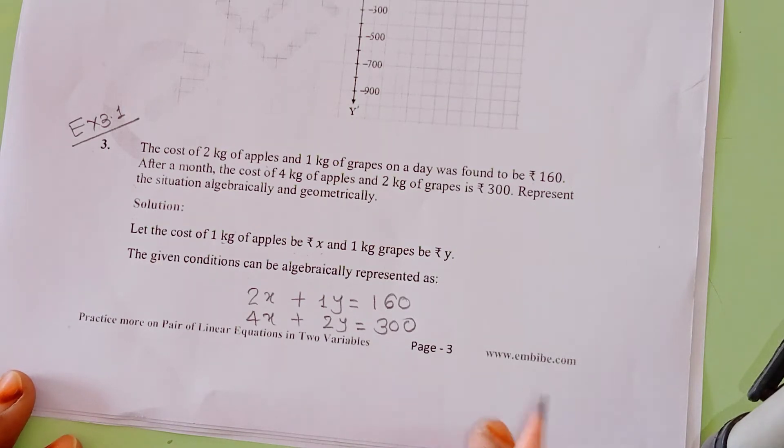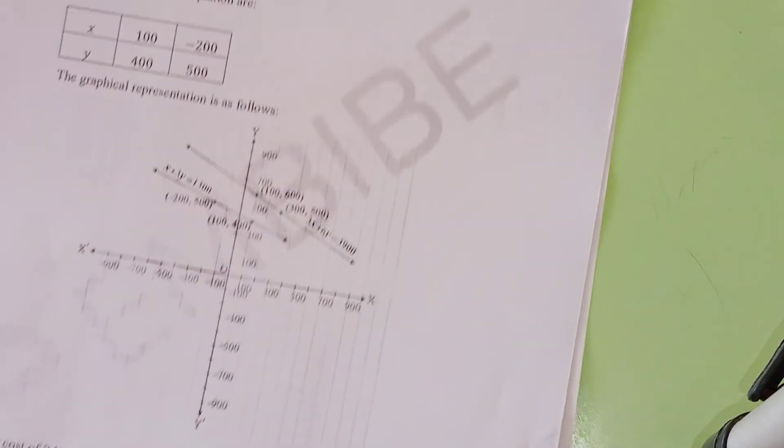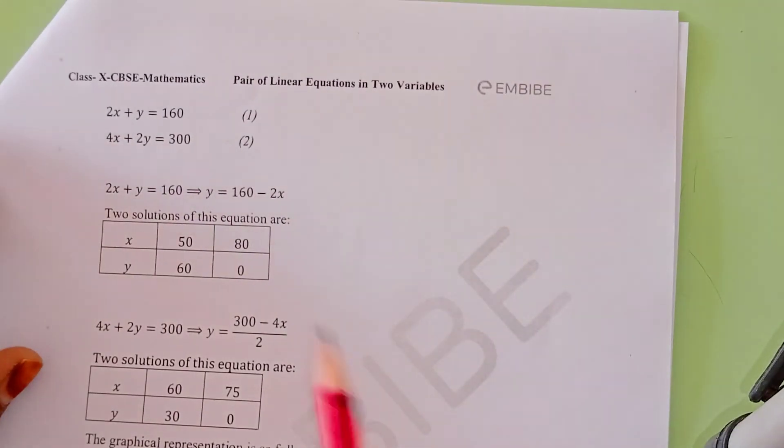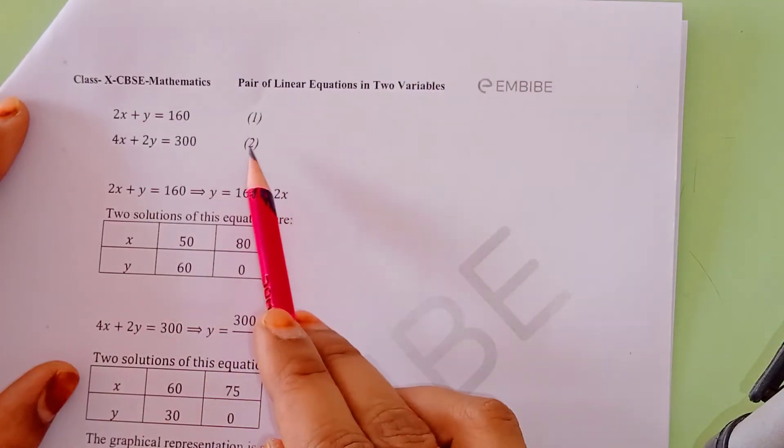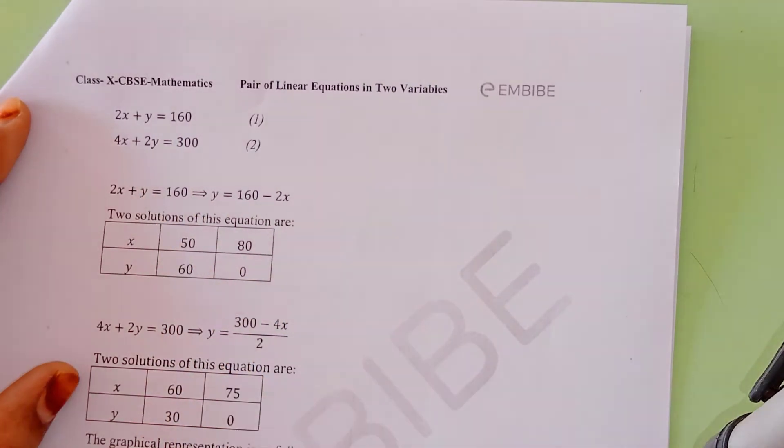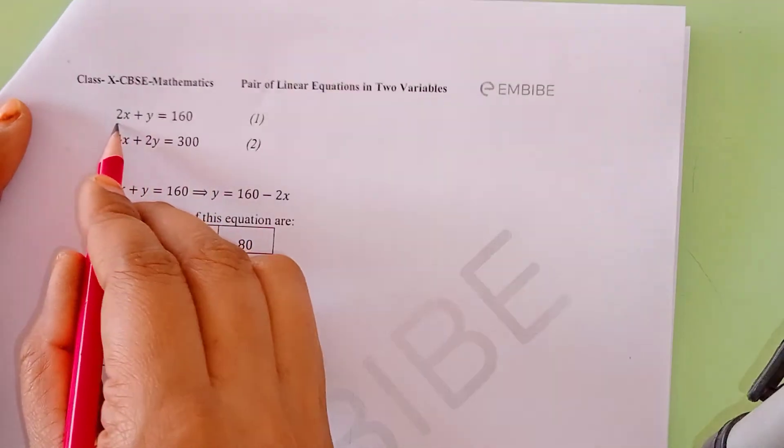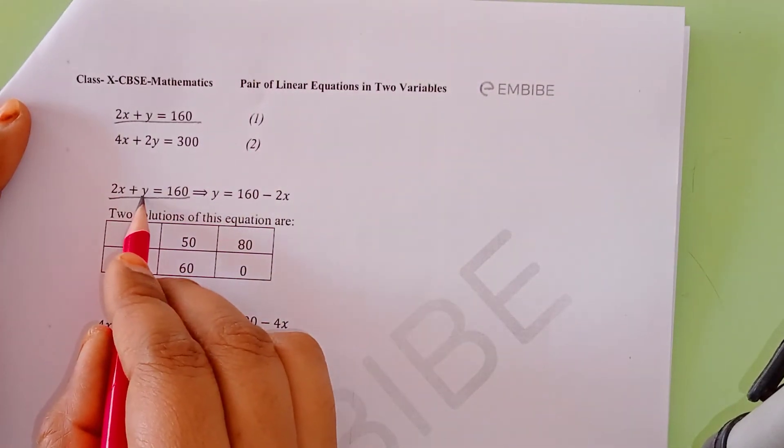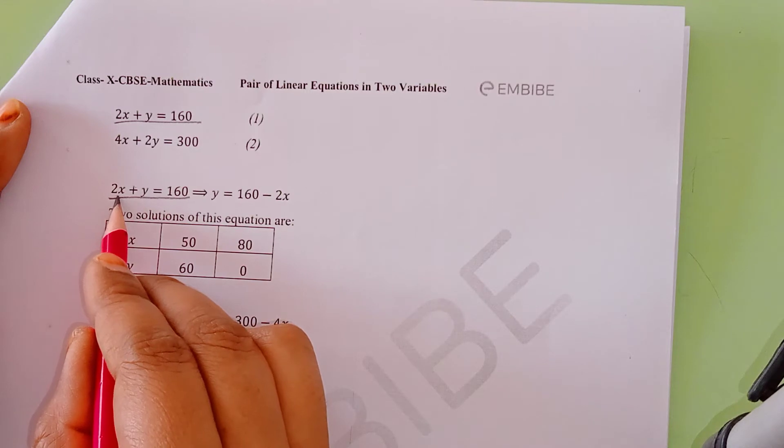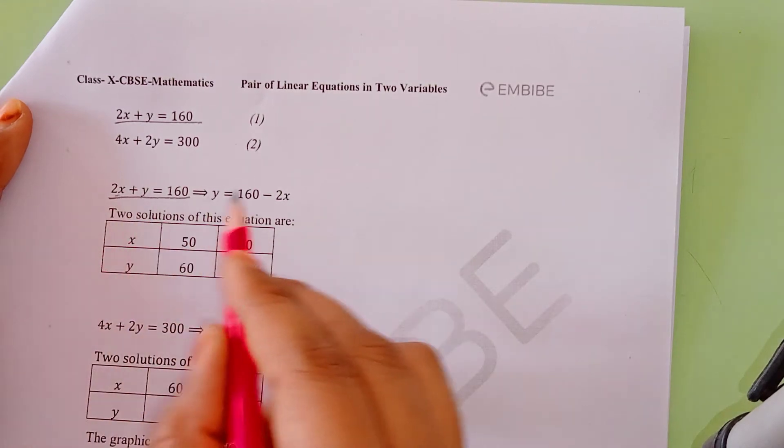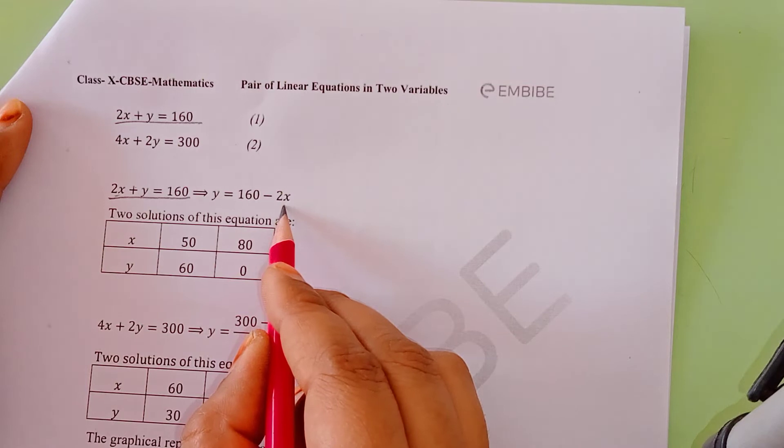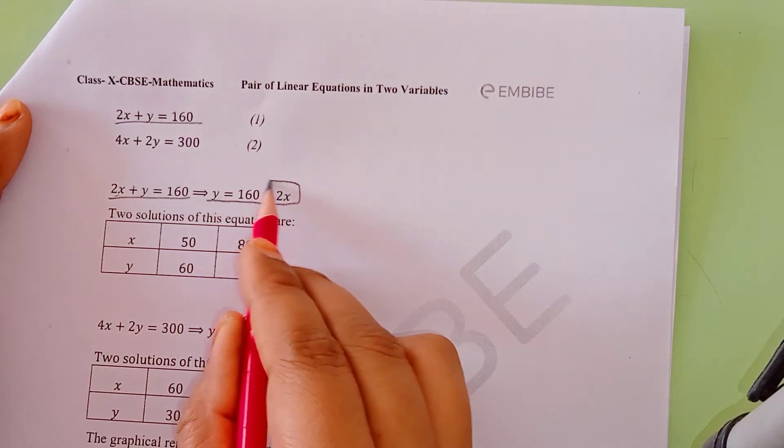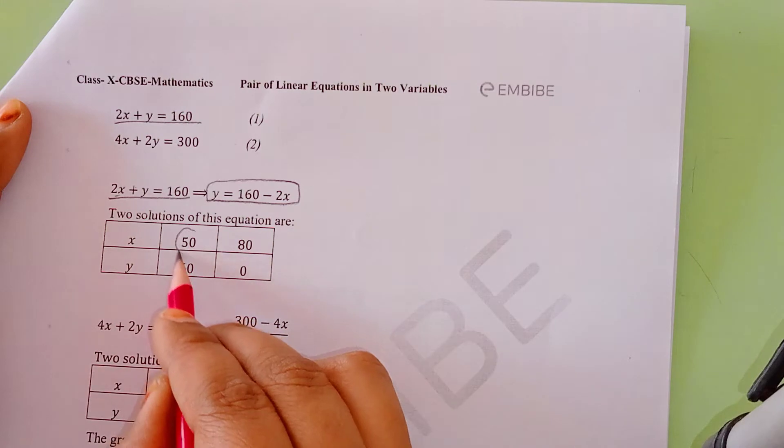Now, we will make this graph. First of all, we have our equation number one and equation number two, and both equations we'll graph. We can take the values according to our first equation. First, we have to rearrange the equation. 2x changes side, so y = 160 - 2x.